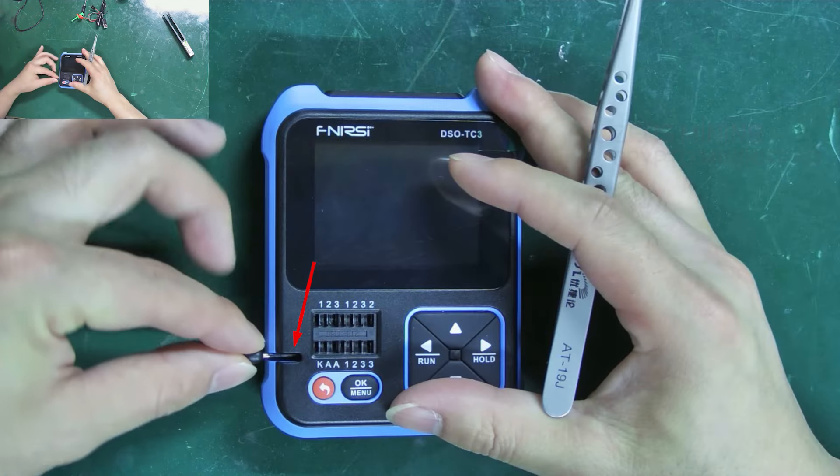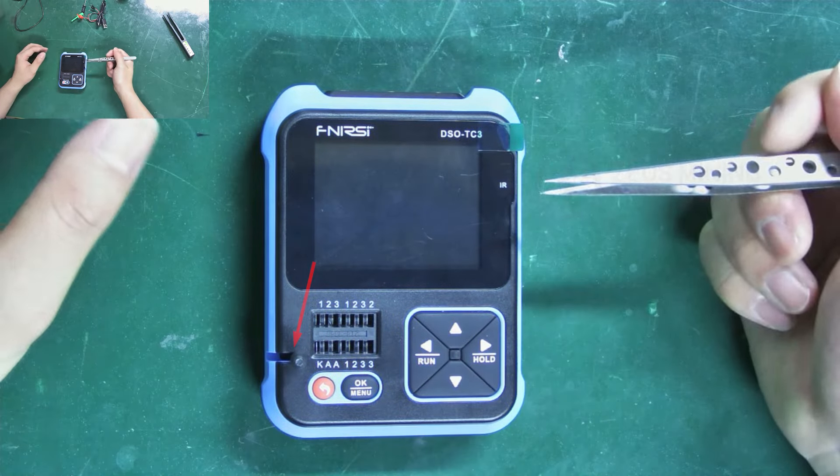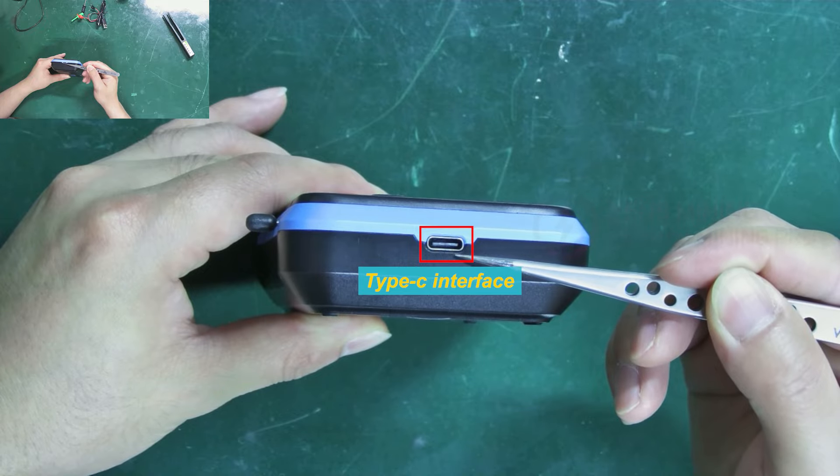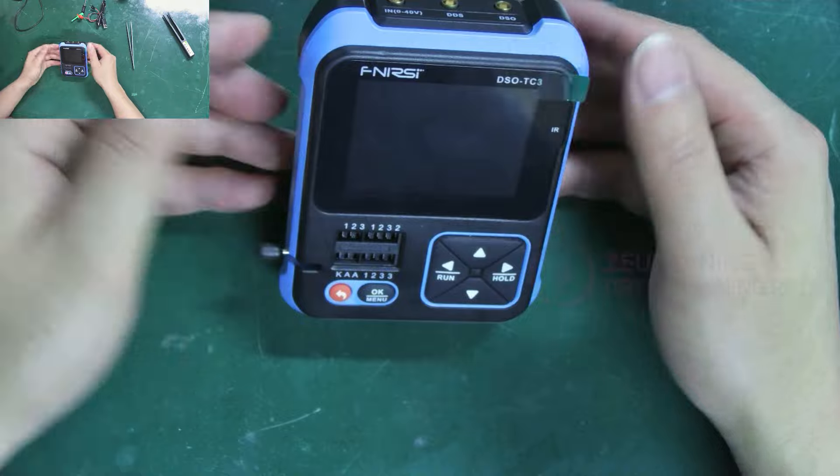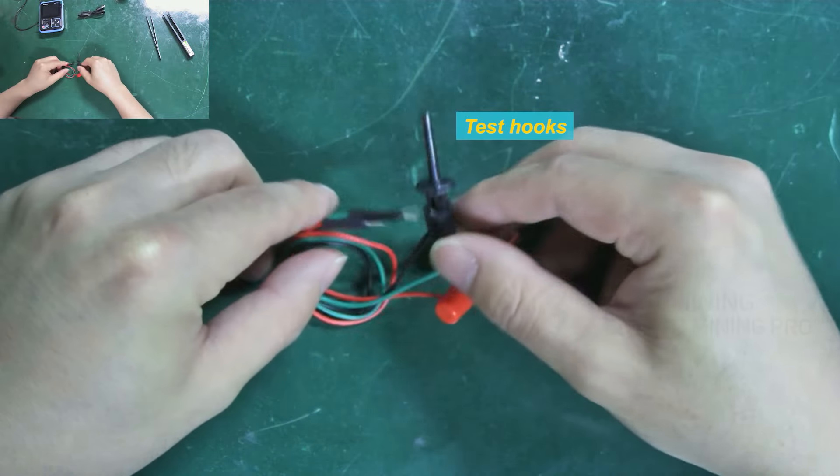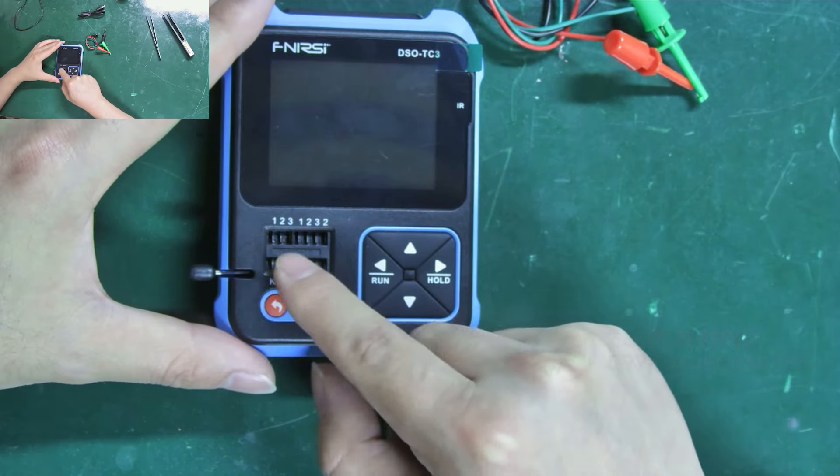The lever here is used to loosen or lock the pins of components during testing. Type-C interface powers the tester. It also has a stand for easy viewing of test data. This is the powering cable. The test hooks are used when the component pins cannot be inserted into the test holes.